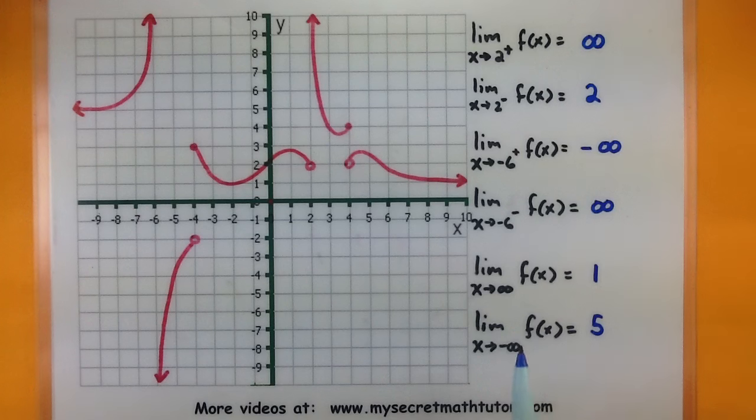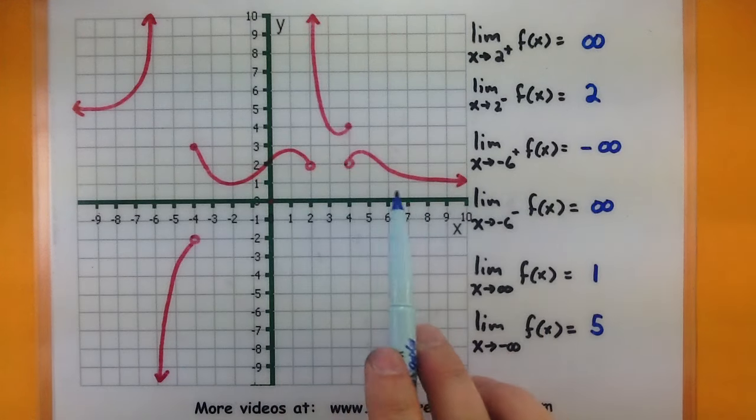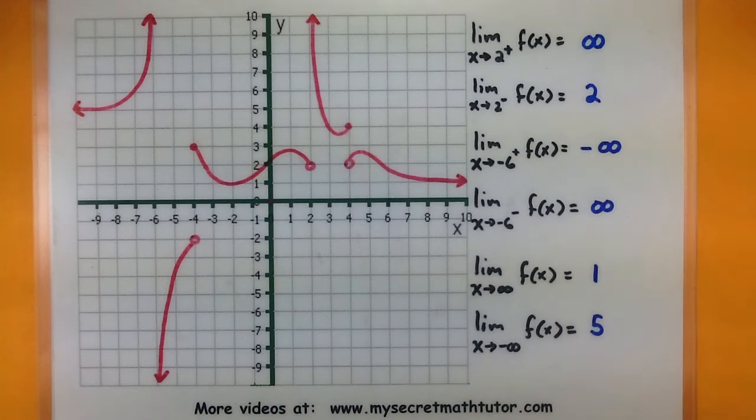Notice for these last two, x is approaching infinity or negative infinity, but we're getting a number as its value. So when interpreting the graph, be very careful. Watch for things that involve infinity by really trying to see where the function wants to go. If you'd like to see more videos, please visit MySecretMathTutor.com.